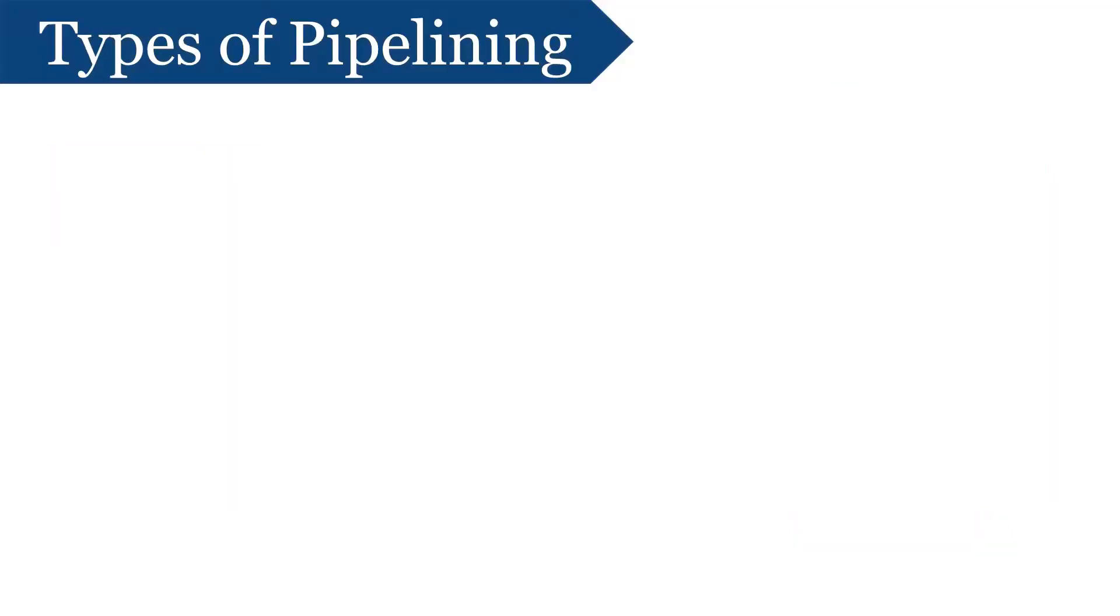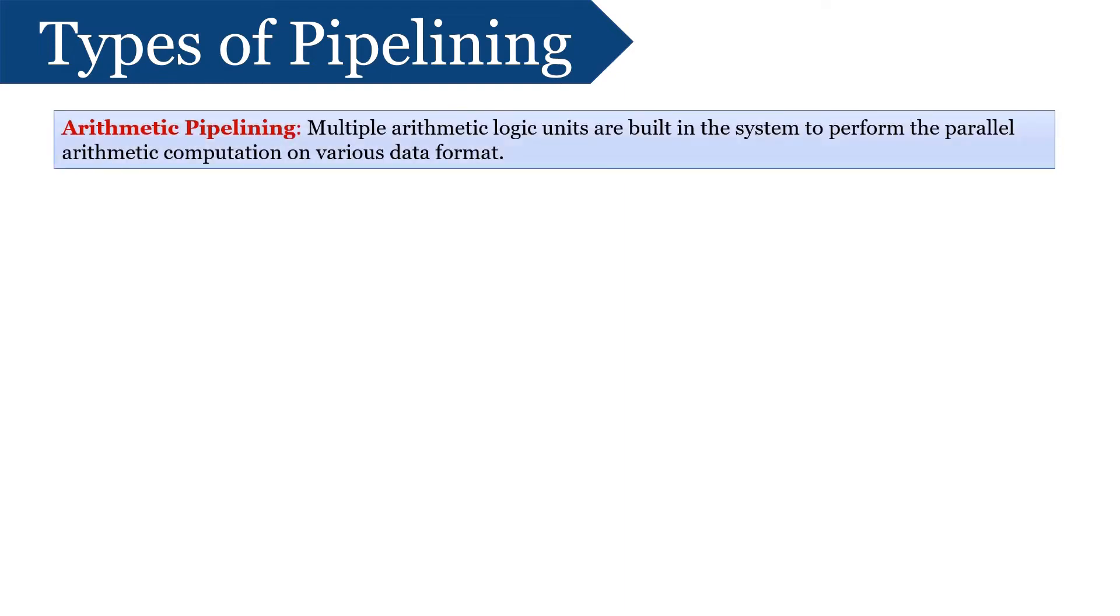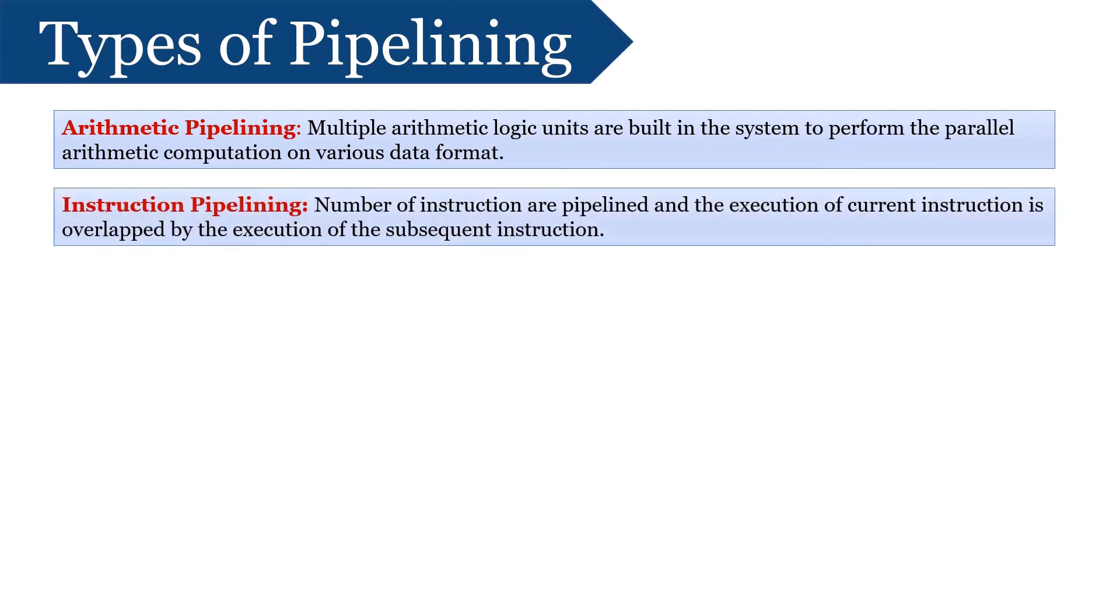The pipelined processors can be classified depending on their functionality. First is Arithmetic Pipelining. It is designed to perform high-speed floating-point operations. Here, multiple arithmetic logical units are built in system to perform parallel arithmetic computations on various data formats. Next is Instruction Pipelining. Here, the number of instructions are pipelined and execution of current instruction is overlapped by the execution of subsequent instruction. It is also called Instruction Lookahead.